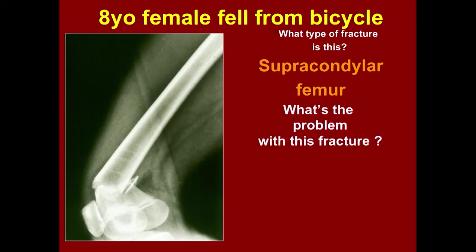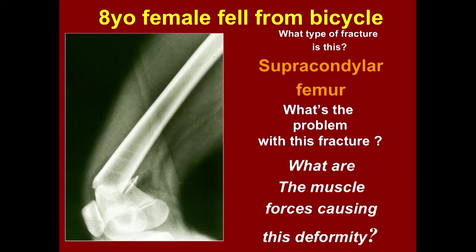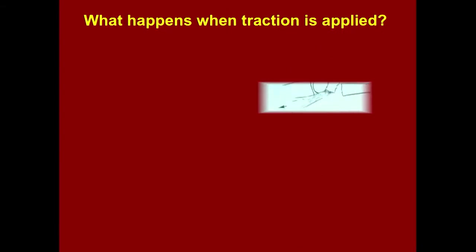What's the problem with this fracture? What do you have to worry about? There are muscle forces attached here. What are the main muscles that originate on the posterior aspect of the distal femur? The gastrocnemius/gastro-soleus. That's right. And what's their effect? They will flex at the knee.